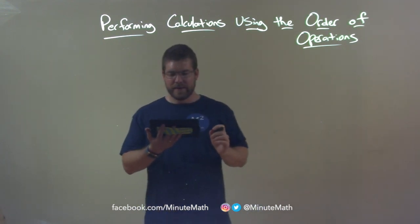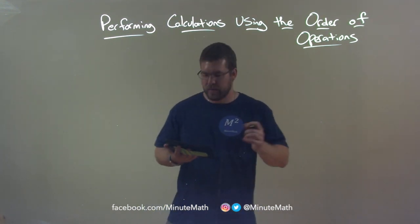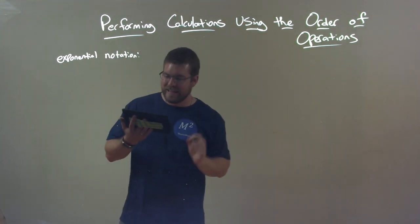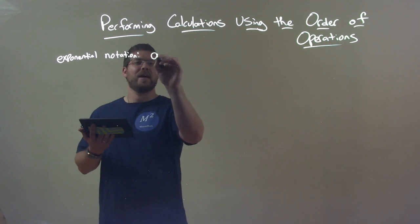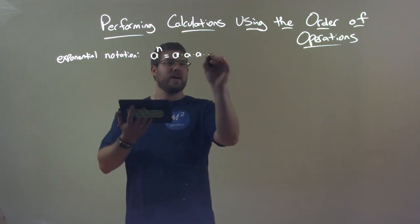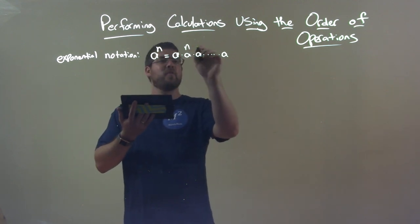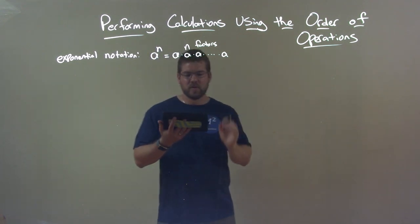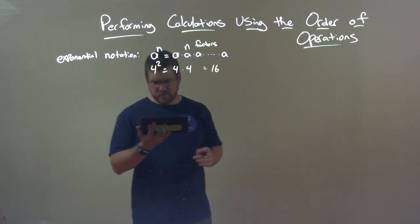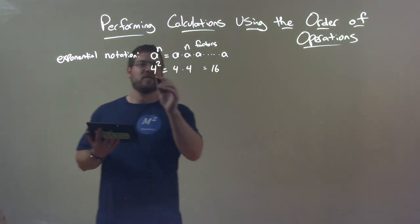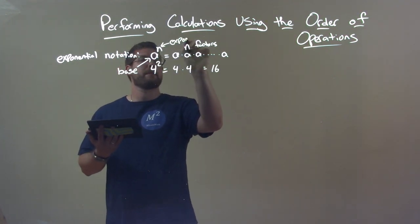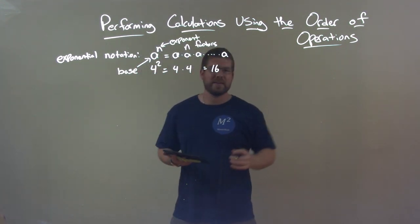So order of operations — a few things we want to touch base on first. Exponential notation is a good thing to note here. A lot of times we'll see stuff like a to the n power, which really means a times a times a... times a, with n factors of it. For example, 4 squared is really just 4 times 4, which is 16. Now we have the base and the exponent: the base is 'a' and the 'n' is what we call our exponent.